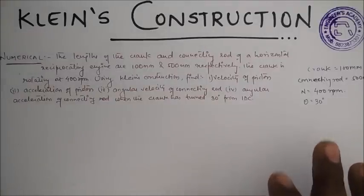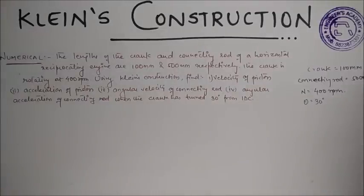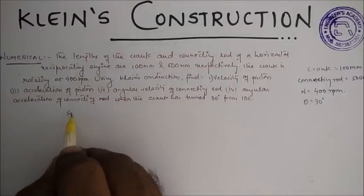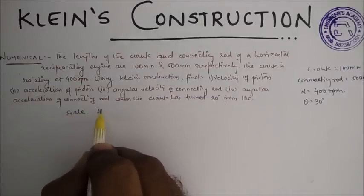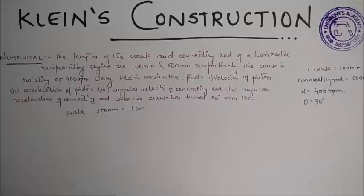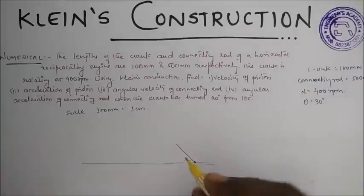let us draw the configuration diagram. To draw the configuration diagram we first need to take the scale. Let the scale be 100 mm equal to 1 centimeter. Therefore take a point from here 30 degrees, take 30 degrees.